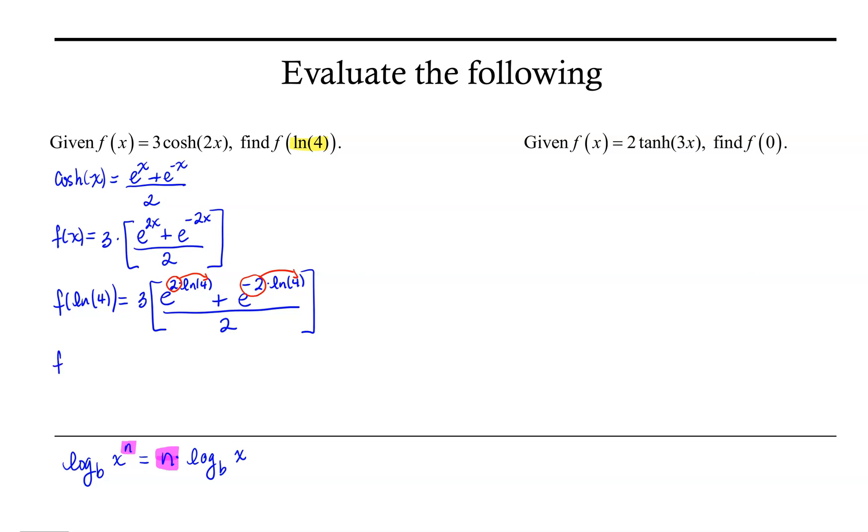So we're going to end up with f of the natural log of 4 is equal to 3 times e to the ln of 4 squared plus e to the ln of 4 to the negative 2 power. Now recall that the exponential function and the logarithm function are inverse functions. That is, if we have e to the natural log of x, that is equal to x.